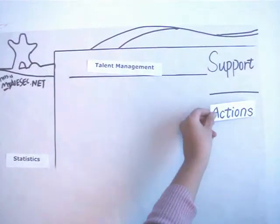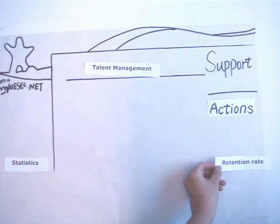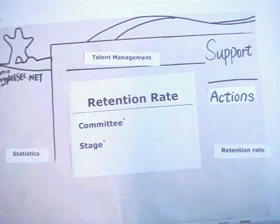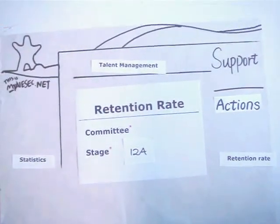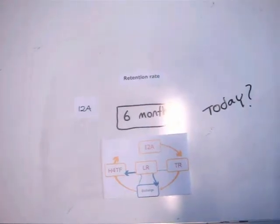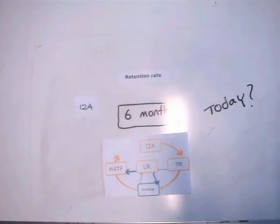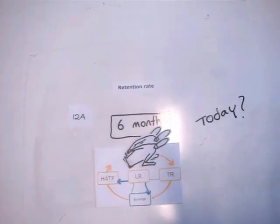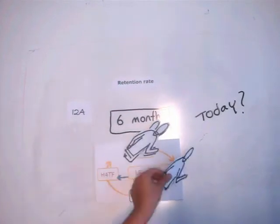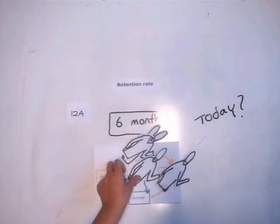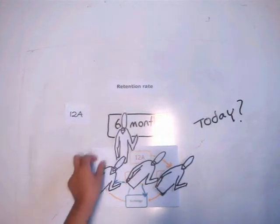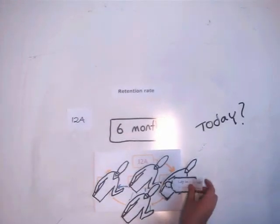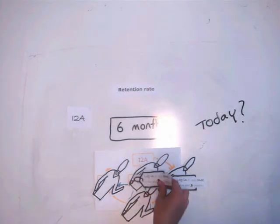On myisaac.net, go to Statistics and select Talent Management. Under Actions on the right, click Retention Rate and choose your local committee. When you select it, you can see the results. The retention rate of members in the Introduction to ISAAC stage refers to people who joined ISAAC six months ago and then moved to Taking Responsibility, Leadership, Heading for the Future, or Exchange stage, and also logged into myisaac.net at least once in the past three months.